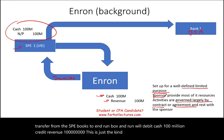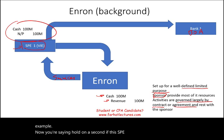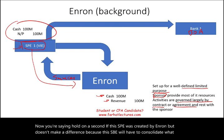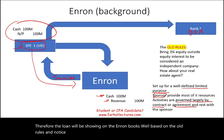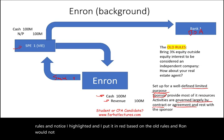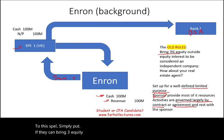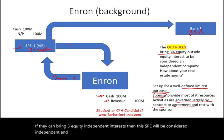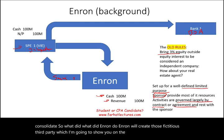You might say: if this SPE was created by Enron, it should consolidate with Enron, so the loan would show on Enron's books. Well, based on the old rules, Enron would not have to consolidate if they could bring 3% independent equity to this SPE. If they could bring 3% independent equity interest, the SPE would be considered independent and they wouldn't have to consolidate. So Enron created fictitious third parties to make the SPE and Enron appear to be independent companies.